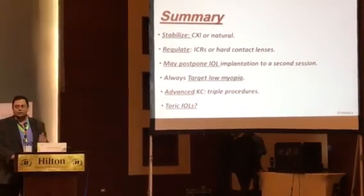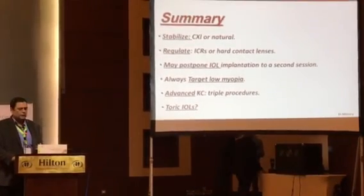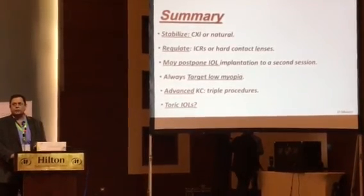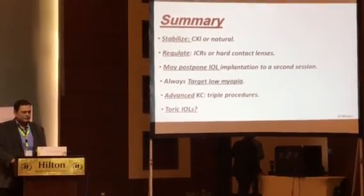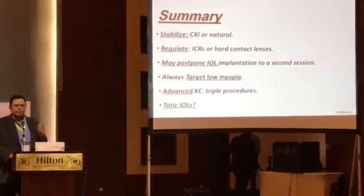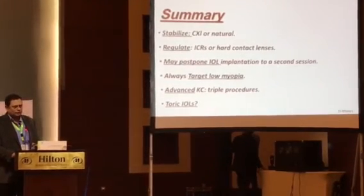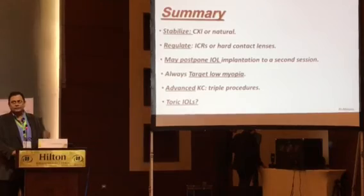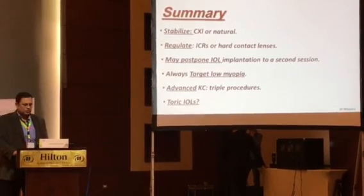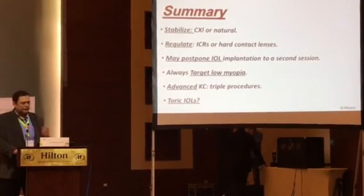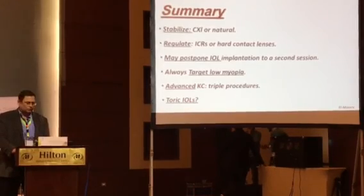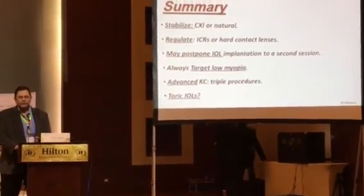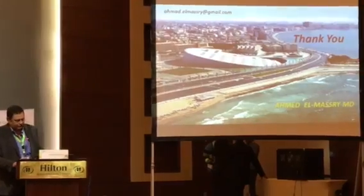To summarize: stabilize the cornea whether by cross-linking or natural stabilization by age; regularize the cornea whether by rings or hard contact lenses; consider postponing intraocular lens implantation to a second session; always target low myopia in keratoconic patients with irregular corneas; treat advanced keratoconus through the appropriate surgical procedure; and toric IOLs still have a role in very selectively chosen patients. Thank you very much.